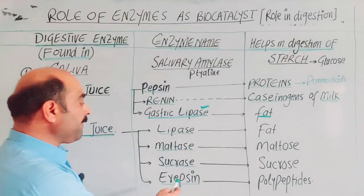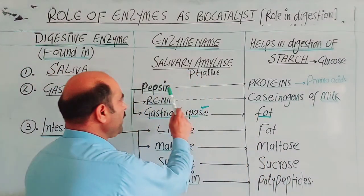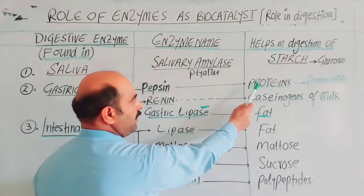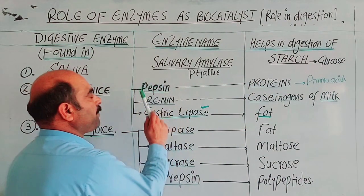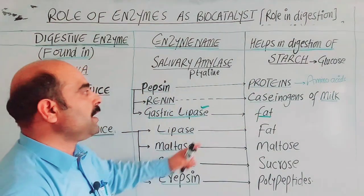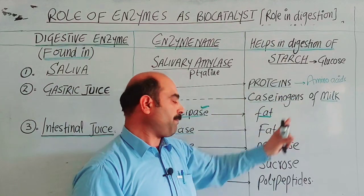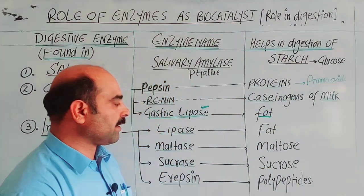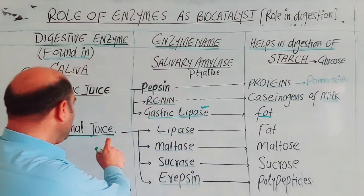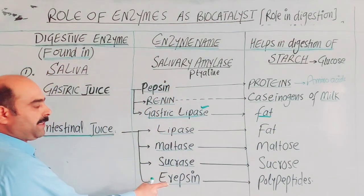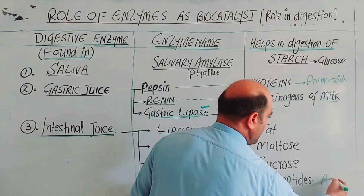The erepsin enzyme works on polypeptides for protein digestion. Proteins already partially digested by pepsin are further converted into amino acids. Erepsin converts polypeptides into amino acids in the small intestine.